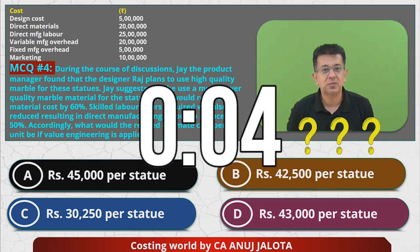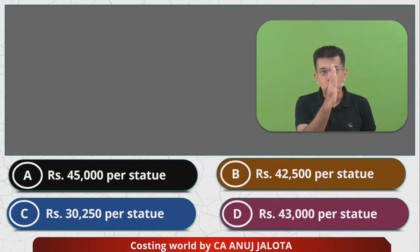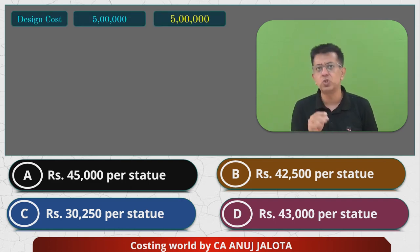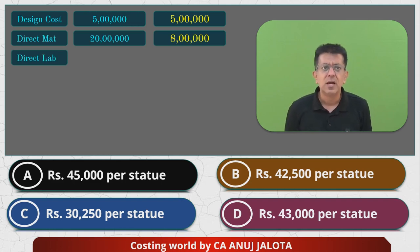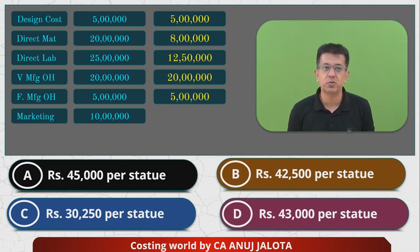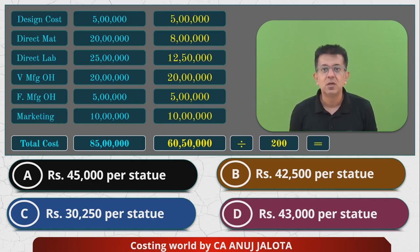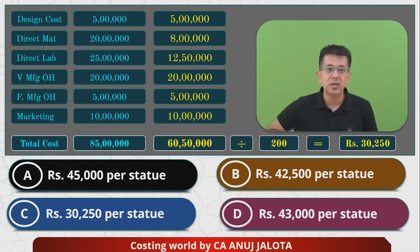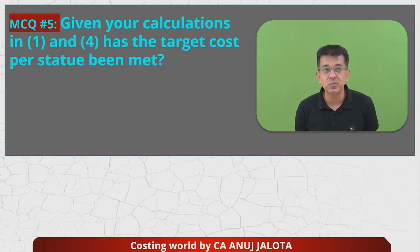Design cost remains 5 lakhs, direct material reduces to 8 lakhs, direct labor reduces to 12.5 lakhs, and all other costs remain the same. New total becomes 60.5 lakhs for 200 statues, giving a revised cost per statue of 30,250. So answer C is correct — if value engineering is applied, the cost falls to 30,250.